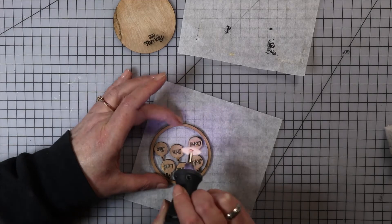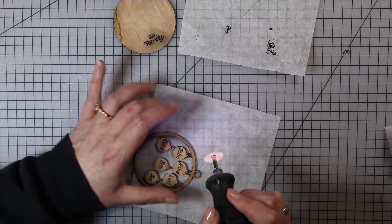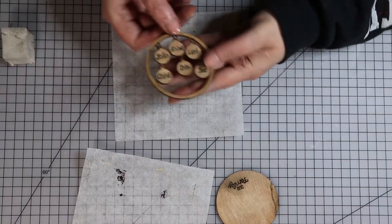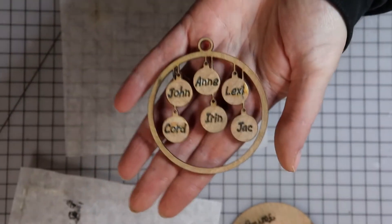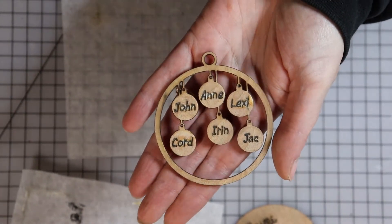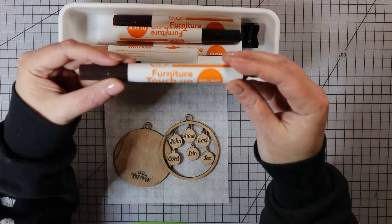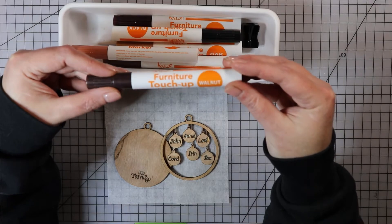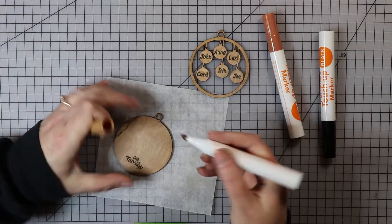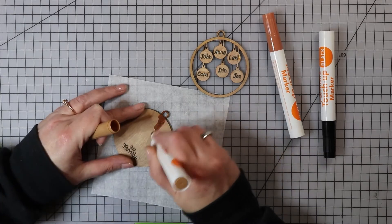Just be careful that you don't sand off too much and lose your engraved detail. I use furniture markers to stain my ornament, but you don't have to do it this way. You don't need to go out and buy anything to make this ornament.